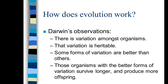Darwin's second observation is that some of that variation is passed on from one generation to the next — we say that variation is heritable. For example, if you are white, chances are both of your parents are white. The information coding for skin color is passed from the parental generation to the progeny. Not all variation is heritable though; body weight, for instance, is partly genetic but also a consequence of lifestyle.